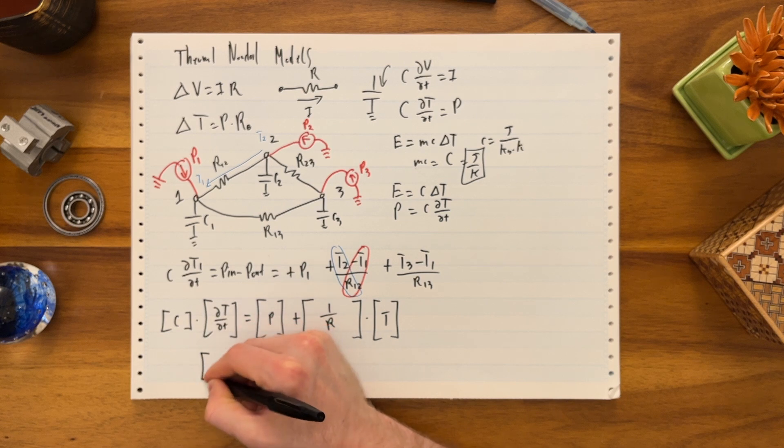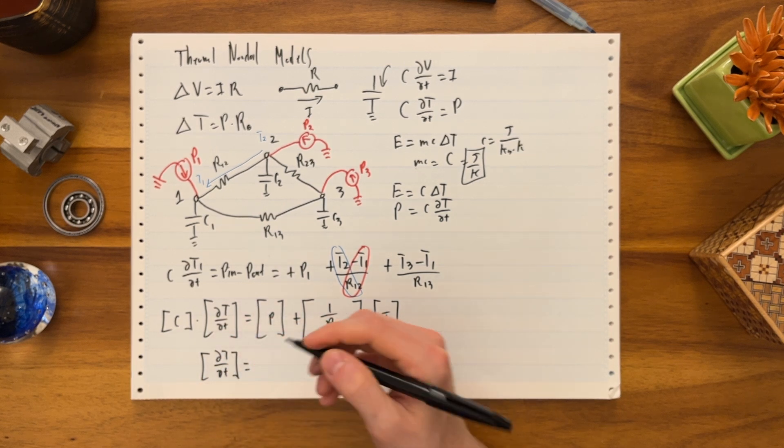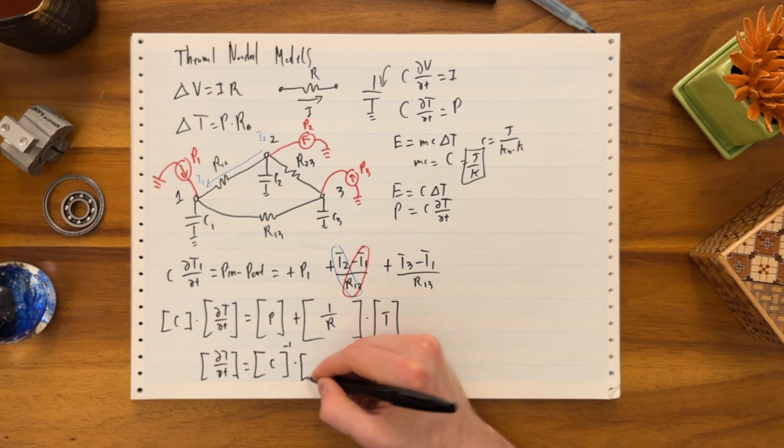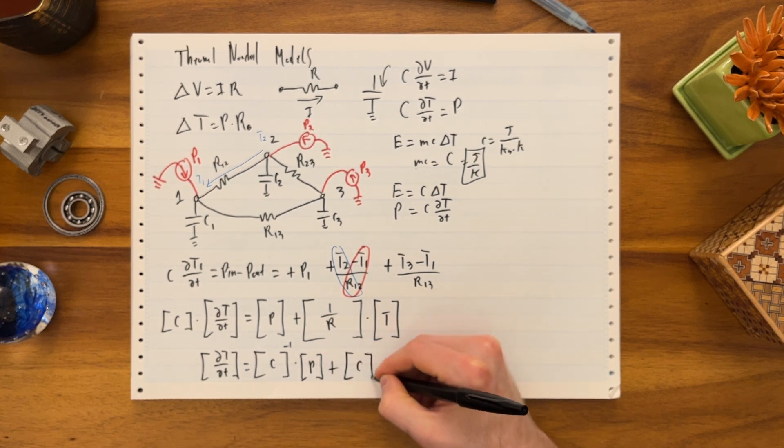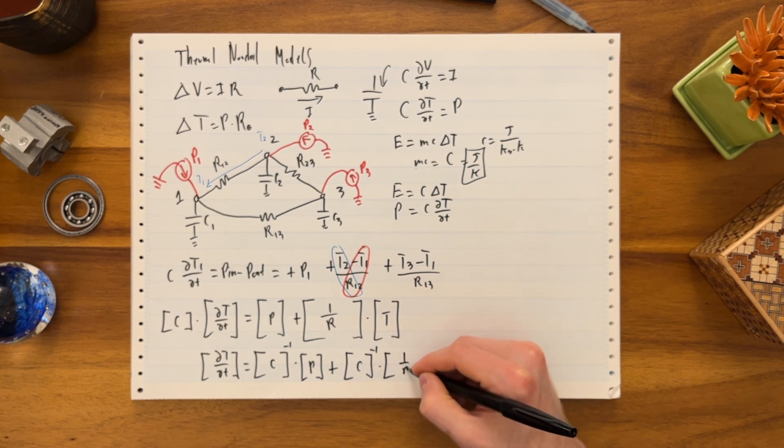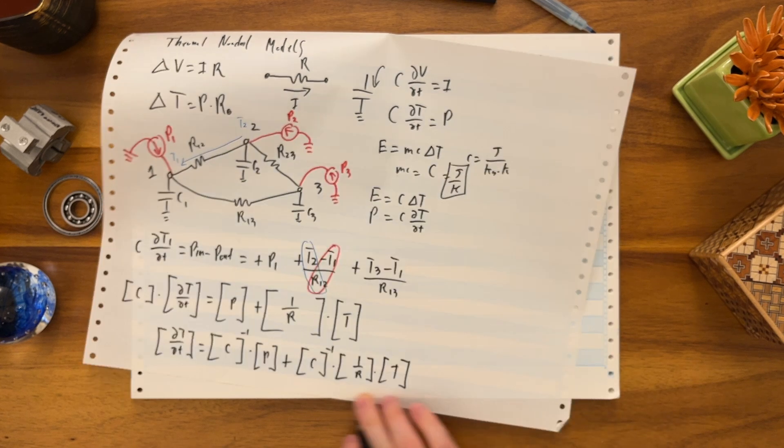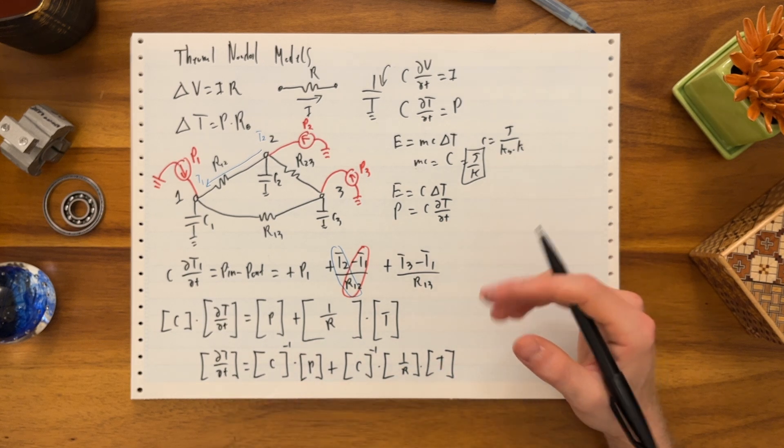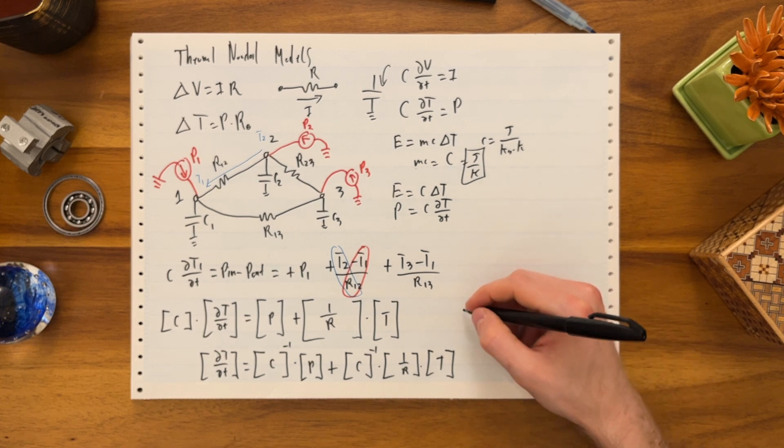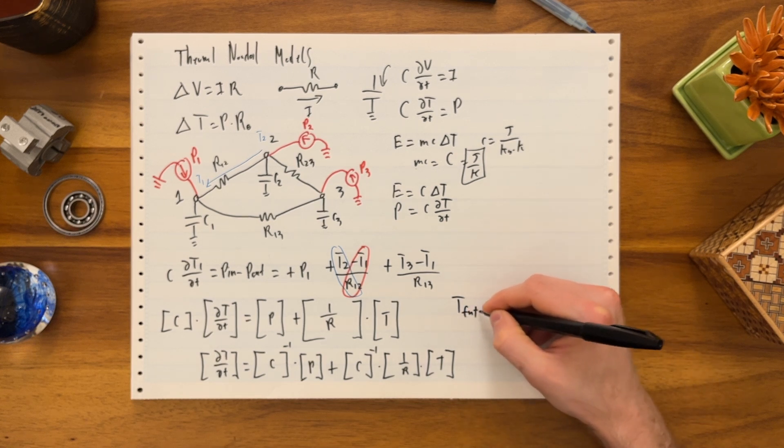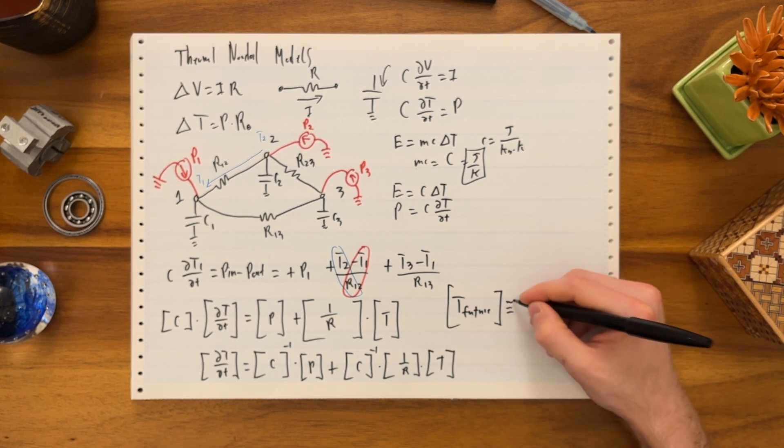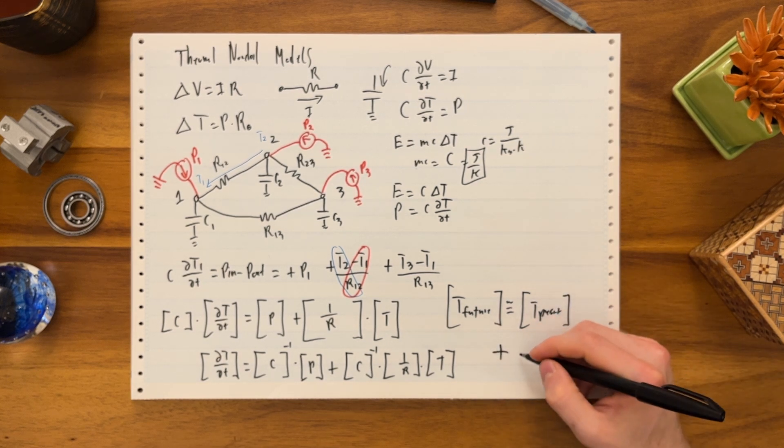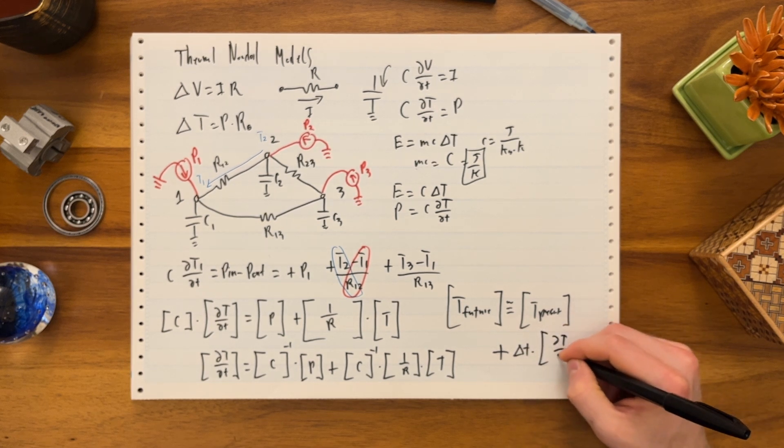And then what you can do: delta T delta T, we get the inverse, C^-1, times the power matrix, plus C inverse times the conduction matrix times the T matrix. And now I can solve at any time for the derivative. That's really powerful because then I can start running a simulation solver. And I can basically invoke: T of the future is pretty darn close to T of the present plus some time step times delta T delta T.